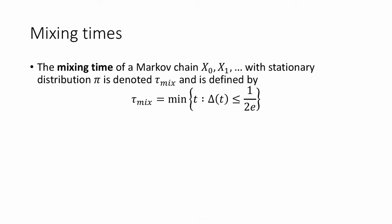That is, this is the first time t so that the distance between the Markov chain and the stationary distribution is small, less than or equal to 1 over 2e, no matter which state s you start in.